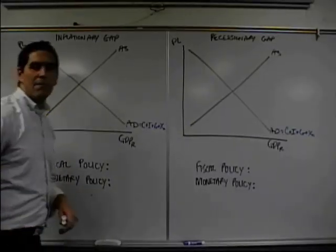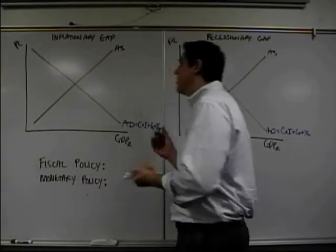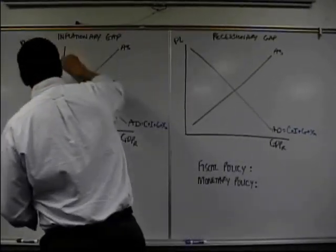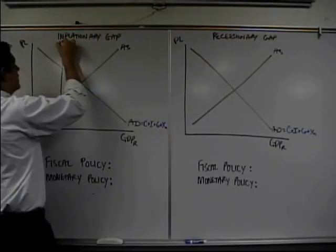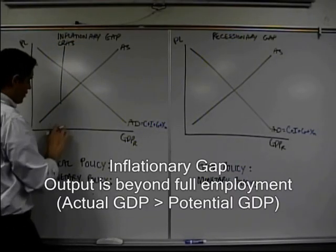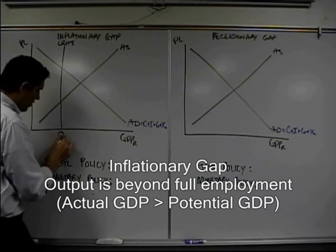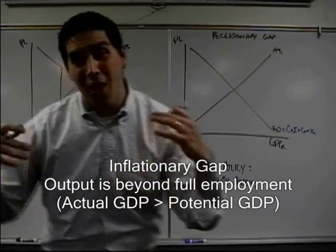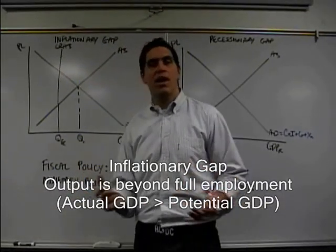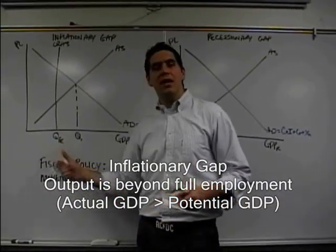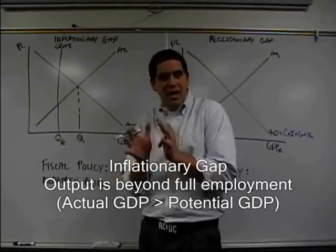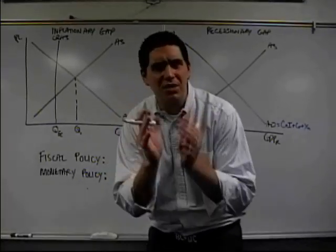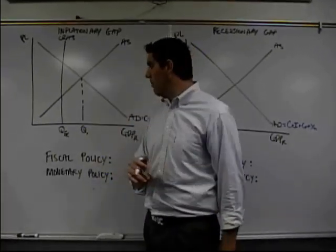Let's do inflationary gap first. So inflationary gap, that concept is pretty simple. It's right here. The long run aggregate supply curve is going to go right here. This represents the quantity at full employment. Now we're actually beyond full employment. Wait, how is it possible to be beyond full employment? It's actually very possible. Remember, full employment means about four to five to six percent unemployment. Let's just call it five percent unemployment is considered full employment.